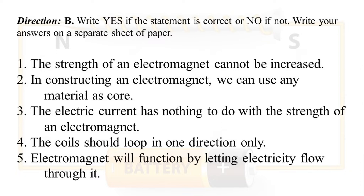Direction B. Write yes if the statement is correct or no if not. Write your answers on a separate sheet of paper. 1. The strength of an electromagnet cannot be increased. 2. In constructing an electromagnet, we can use any material as core. 3. The electric current has nothing to do with the strength of an electromagnet. 4. The coils should loop in one direction only. 5. Electromagnet will function by letting electricity flow through it.